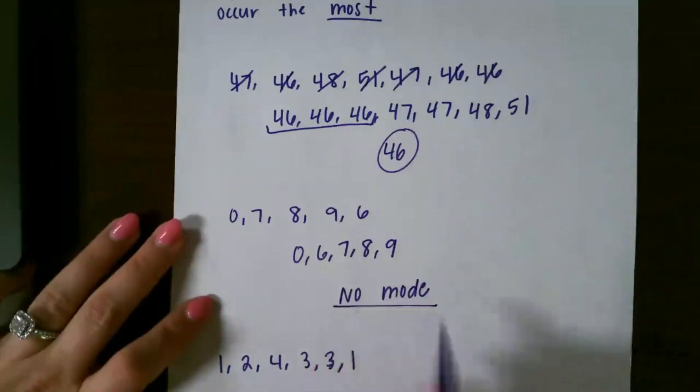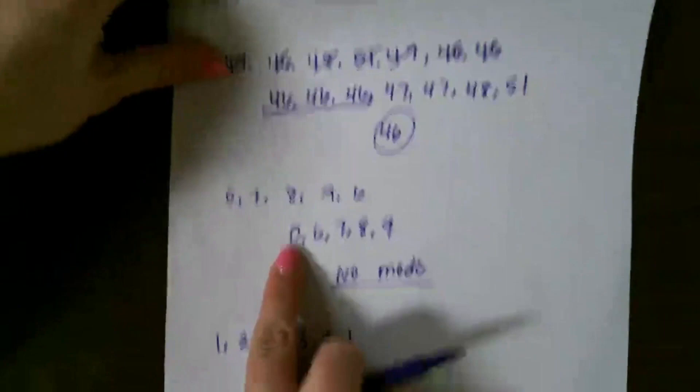It's important not to put zero here, because zero doesn't repeat itself or show up more than once.